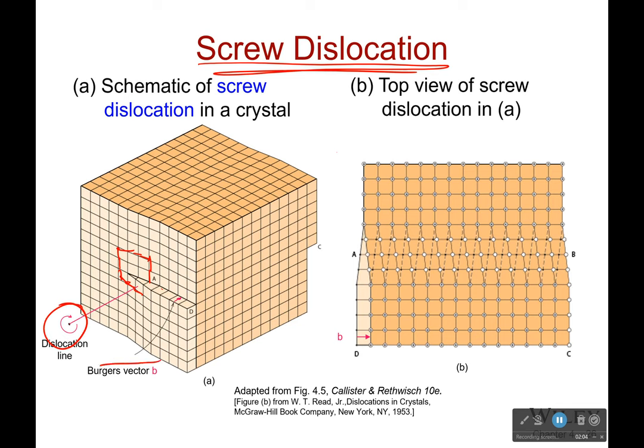My Burgers vector, which is the thing that connects where I began to where I ended, is also going to be going into or out of the page. So the Burgers vector and the dislocation line are parallel this time — they are parallel.